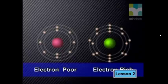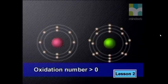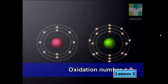An oxidation number gives us an idea of how electron-rich or electron-poor any atom is. When an atom is electron-poor, it will have an oxidation number greater than zero — that is, positive. When it is electron-rich, it will have an oxidation number less than zero — that is, negative.